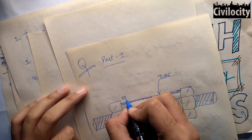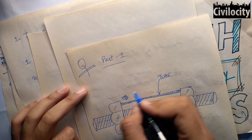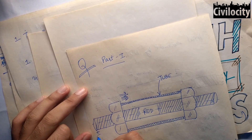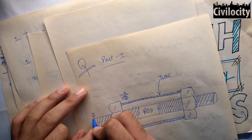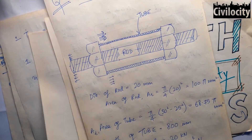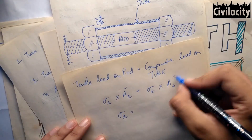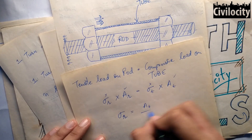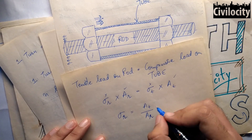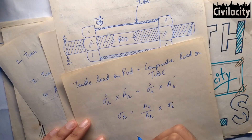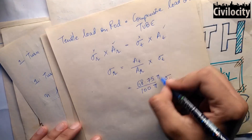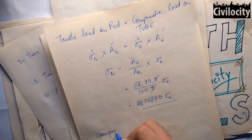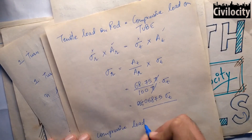Since no external force is acting, the compressive force in the tube equals the tensile force in the rod: sigma_r times Ar equals sigma_t times At. We know both areas. Expressing sigma_r in terms of sigma_t: sigma_r equals (At divided by Ar) times sigma_t. Since pi cancels out, we get sigma_r equals 0.6875 times sigma_t.